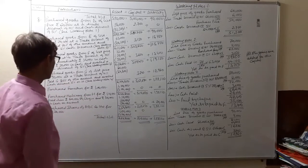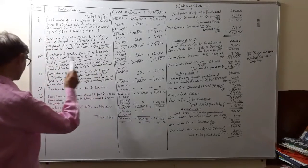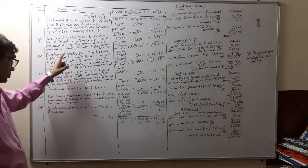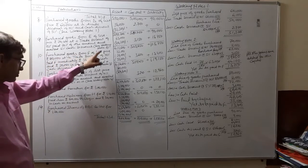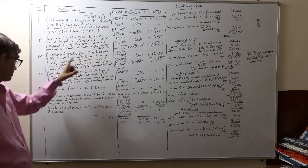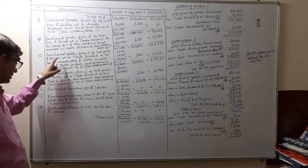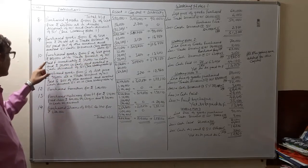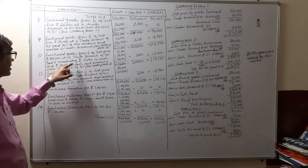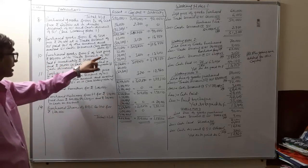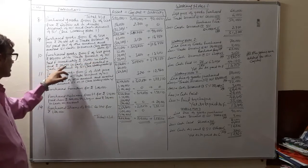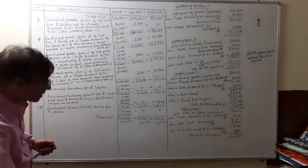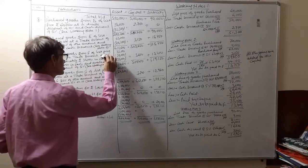Transaction 10: Purchase goods from F of list price rupees 80,000 at a trade discount of 10 percent. Paid F immediately rupees 35,000 by check and rupees 20,000 in cash.